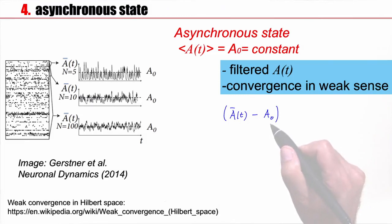I use this filtered population activity, say filter with a time constant of one millisecond, and I look at the difference to my reference value A₀. I want to check whether such an A₀ exists. If this difference is squared, which means it doesn't matter whether I have a positive peak or a negative, if these differences are small, then I would say I'm in a state of asynchronous activity.